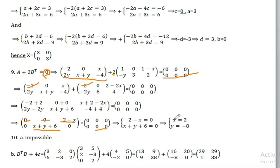2 minus x equals 0, so x equals 2. And x equals 0 from the other equation.